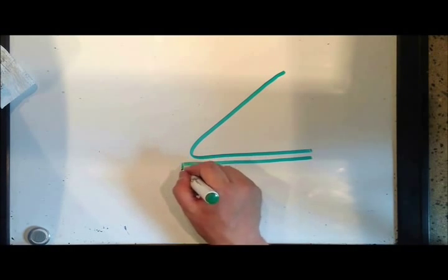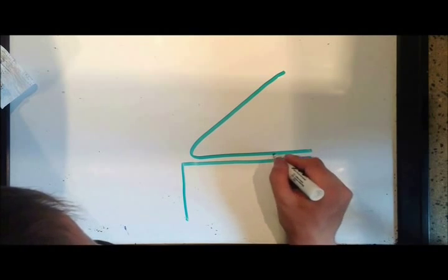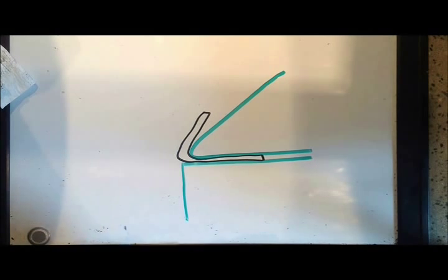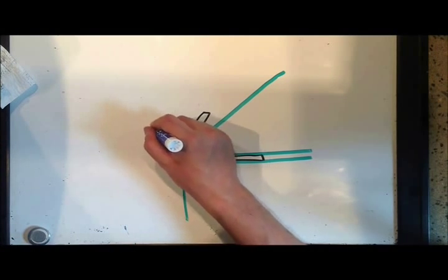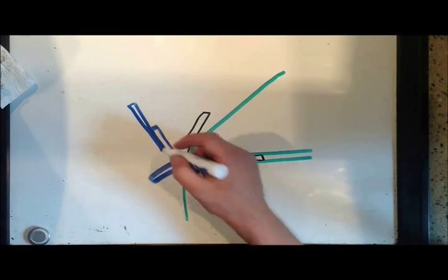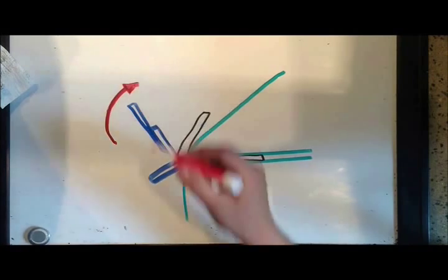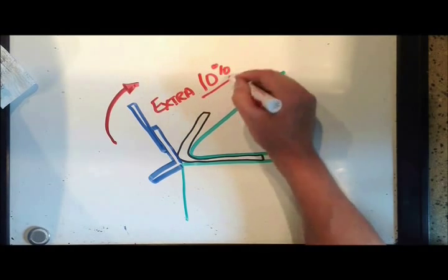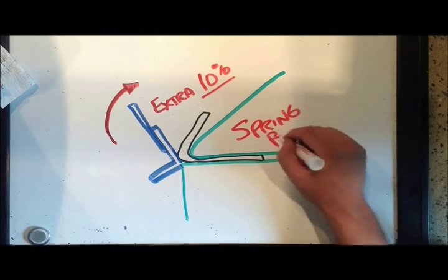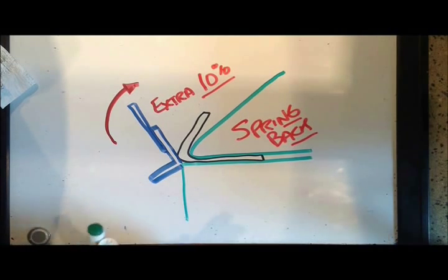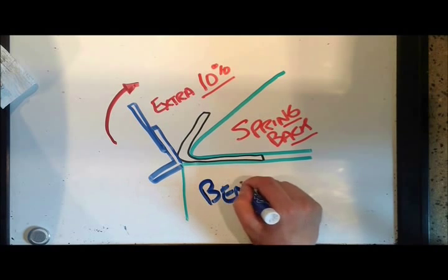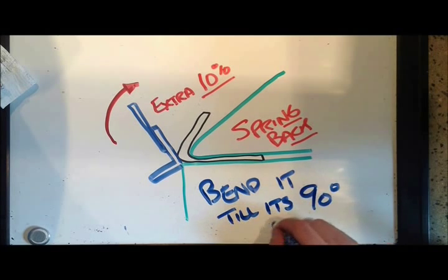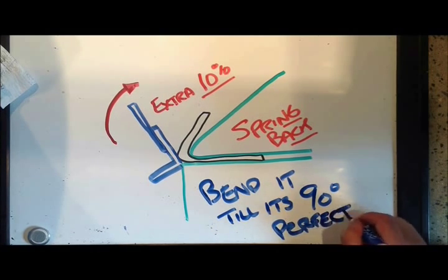Once you get that piece of material in exactly where you want it into the bending break, we can grab that bending arm and start bending our material up to 90 degrees. Now, aluminum is kind of springy, and so we actually have to bend it a little bit past the 90 degree mark, usually about 10% past. As you bend more and more material, you'll get a feel for what is just about perfect for getting that 90 degree bend. The material tends to spring back and try to go back to its original shape. So when we bend it, we need to just add a little bit extra to make sure that we get the perfect 90 degree bend.